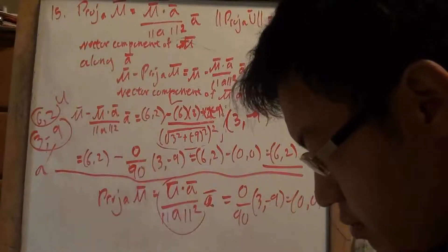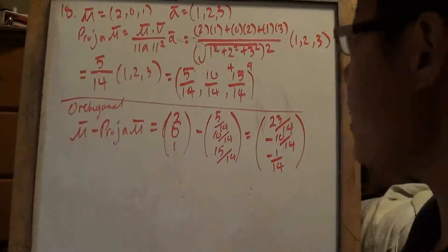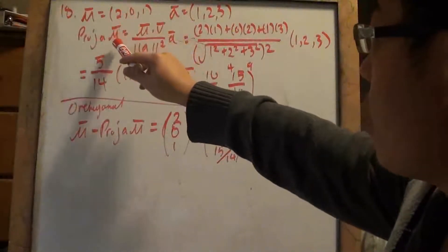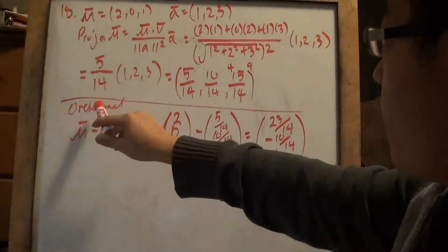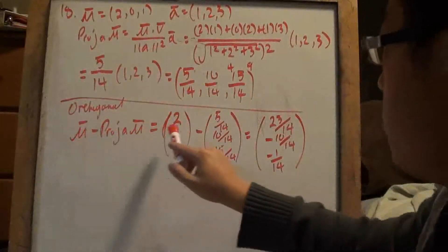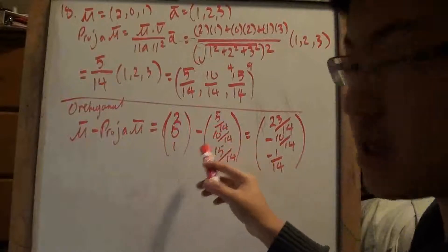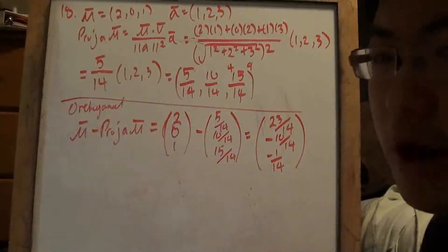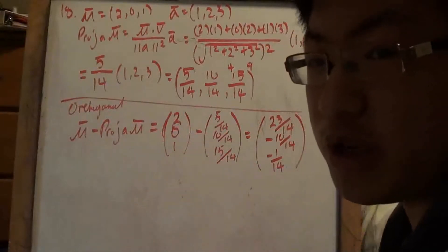Let's try question 18. You have the given vectors, and I'm going to find the projection of vector u along a. Just follow through: dot product divided by the norm squared. For the orthogonal component, it's a similar equation but you subtract the projection from u. I do it this way so I can subtract a little easier — I'm a visual learner. The final step is simple subtraction to get the orthogonal vector. Be comfortable with these formulas — they should be drilled in your head so you know what to do even before fully reading the question.